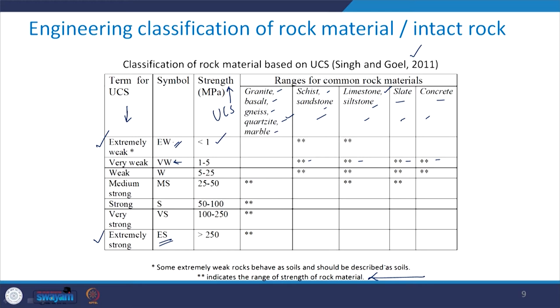Let us see if I take the medium strong category — some variety of granite, basalt, gneiss, quartzite, or marble lie in this category, and limestone, siltstone, and slate also lie in that category. These rocks in general belong to the stronger categories, so you will see that for strong, very strong, and extremely strong categories, they are present in all three categories. This gives you an overall picture about the common rock types, common rock material or intact rock, and their classification on the basis of their UCS value.